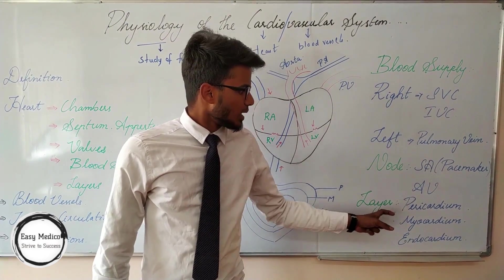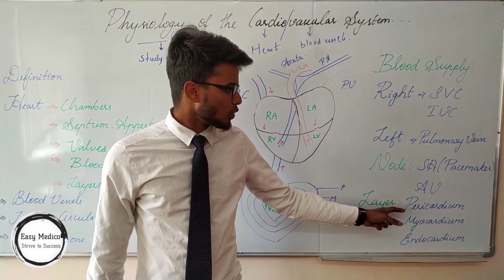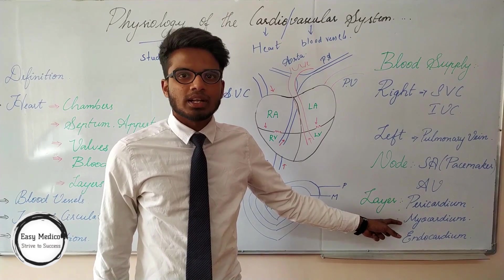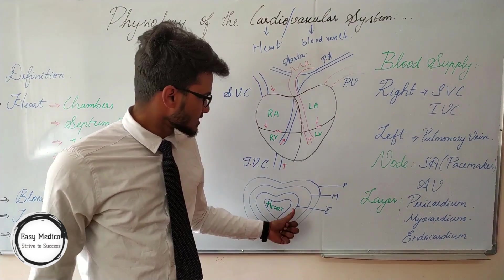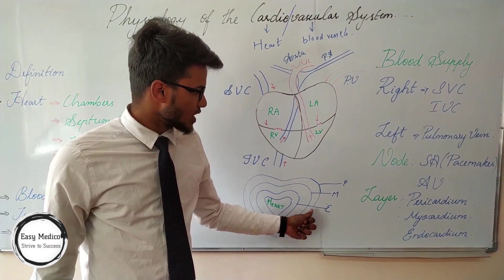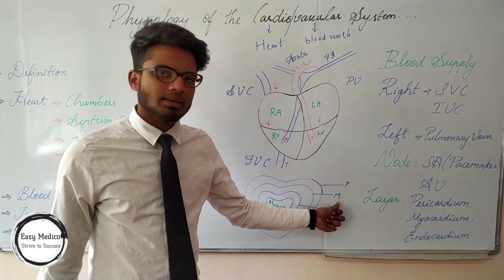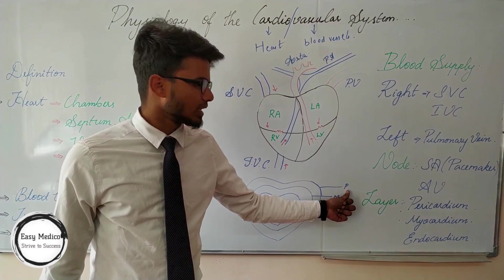There are three main layers of the heart: the outer pericardium, the middle myocardium, and the inner endocardium. If this is the heart, the inner layer is known as the endocardium, the middle layer is the myocardium, and the outer layer is the pericardium.